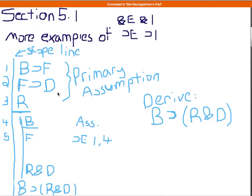Now that we have F, we know that we can also get D, because we can use the same rule again, conditional elimination. So at line six, we can write D, and we get that again by conditional elimination from lines two and five. And now we're going to have everything we need to get R and D, because we have R on line three, and we have D on line six, and so we can actually do conjunction introduction.